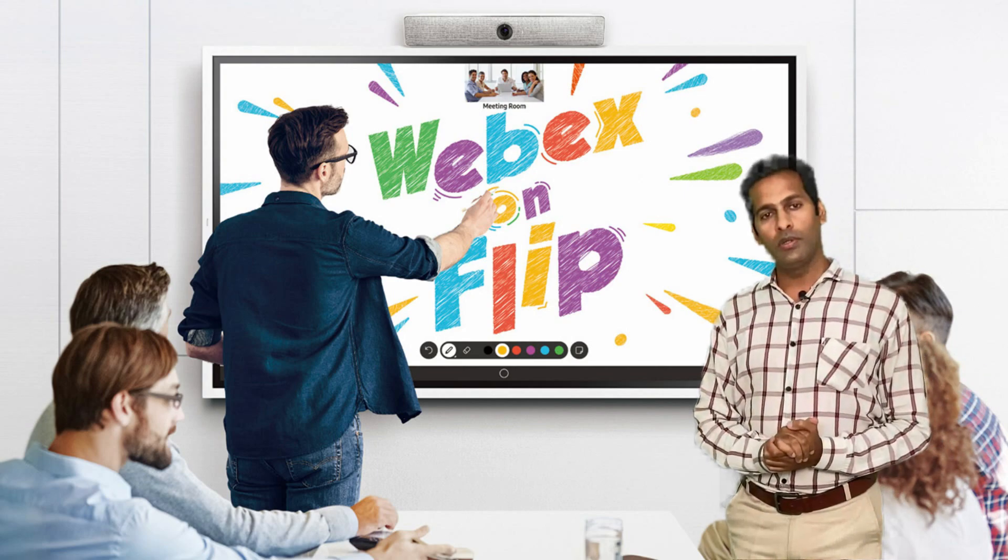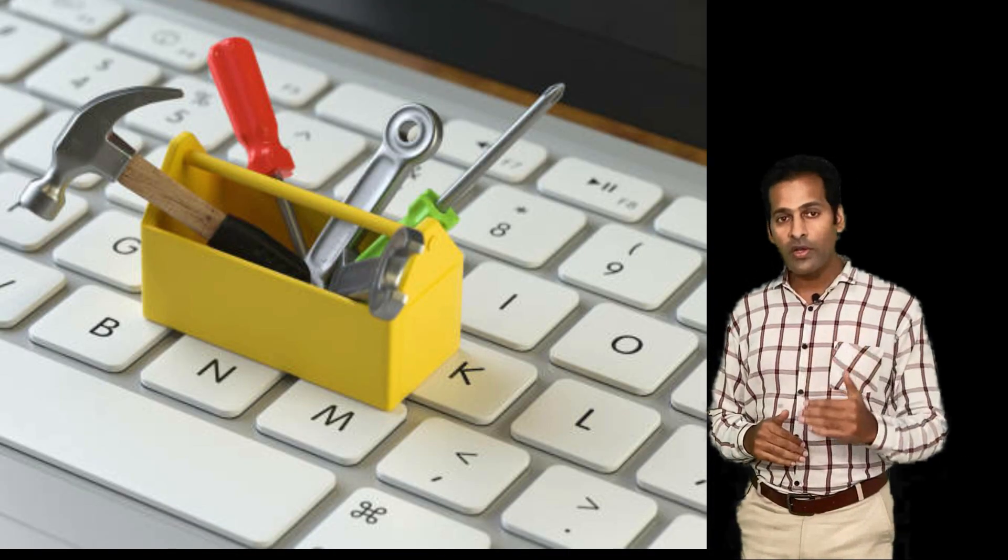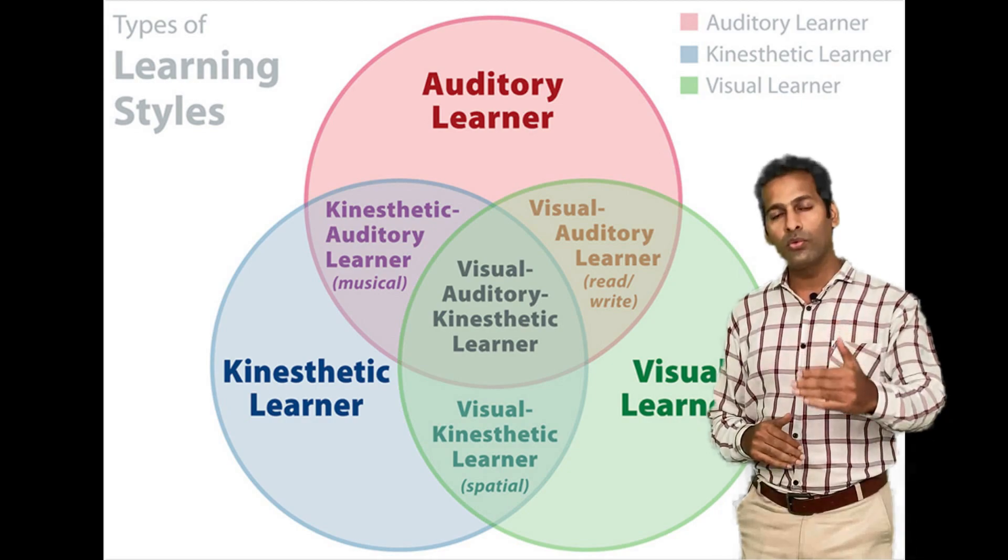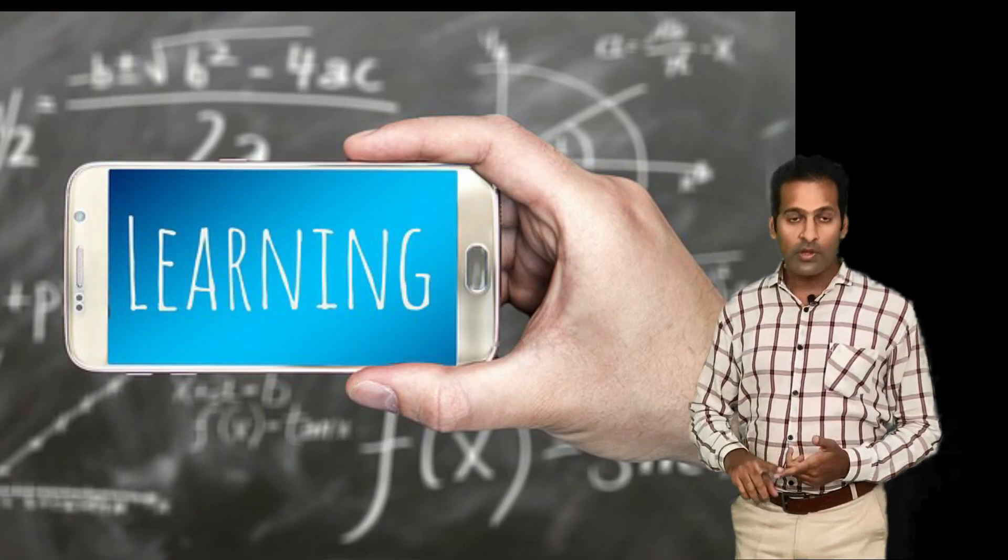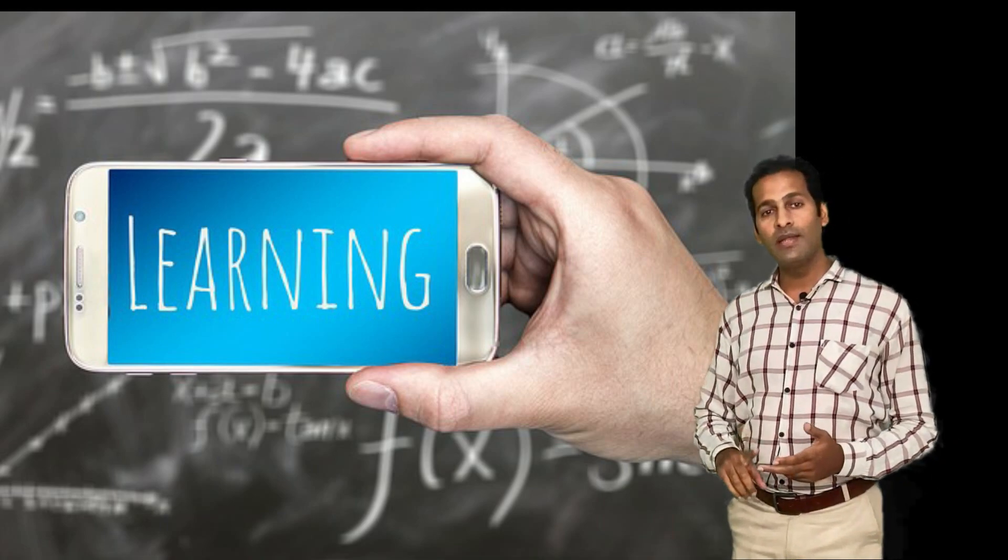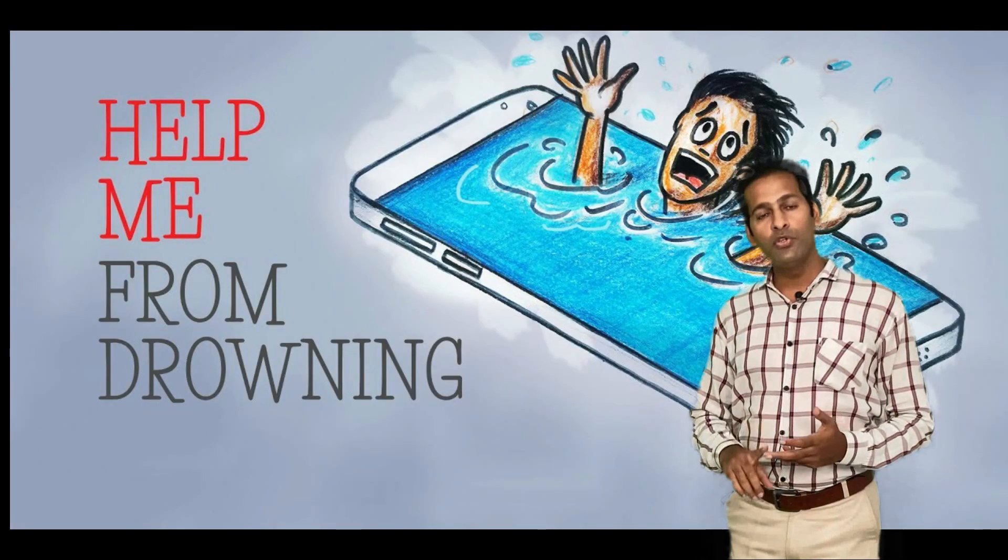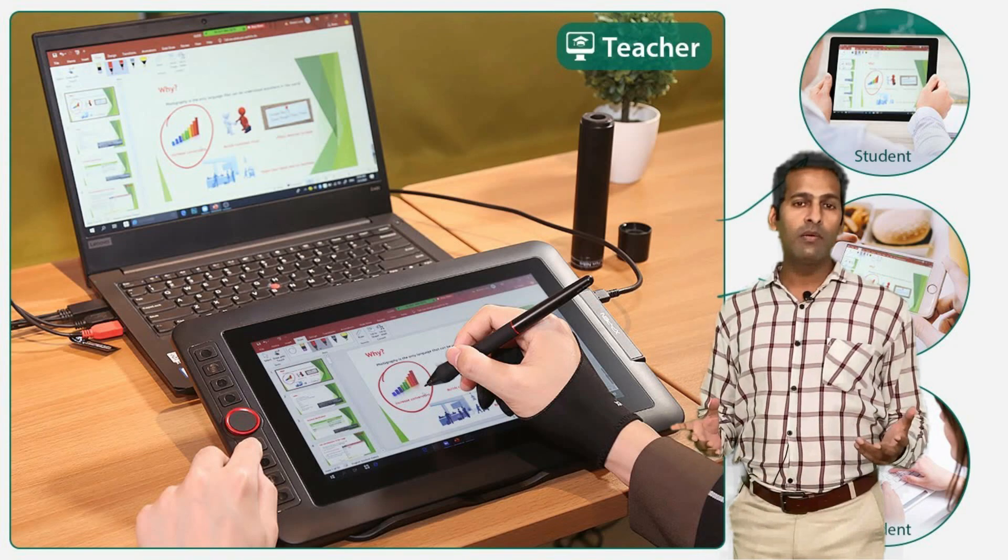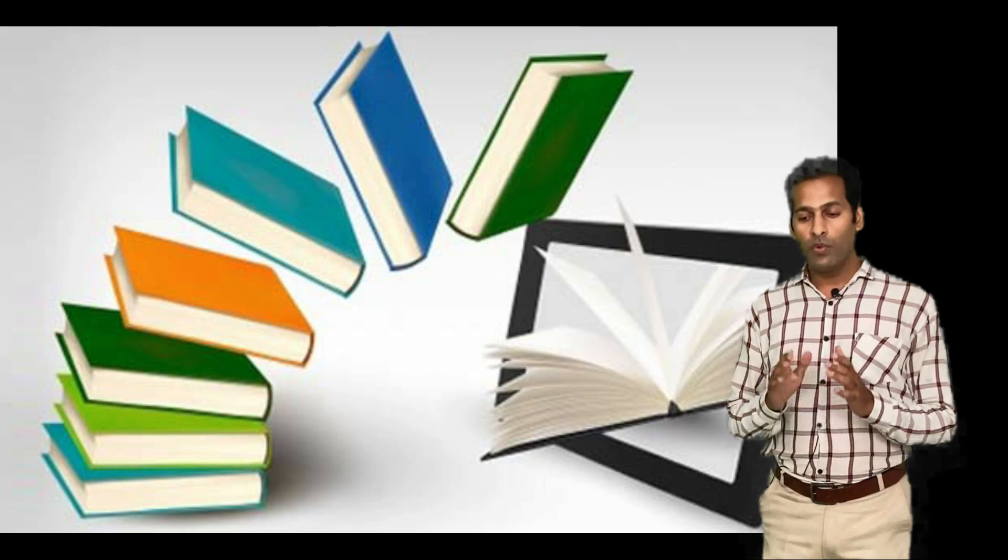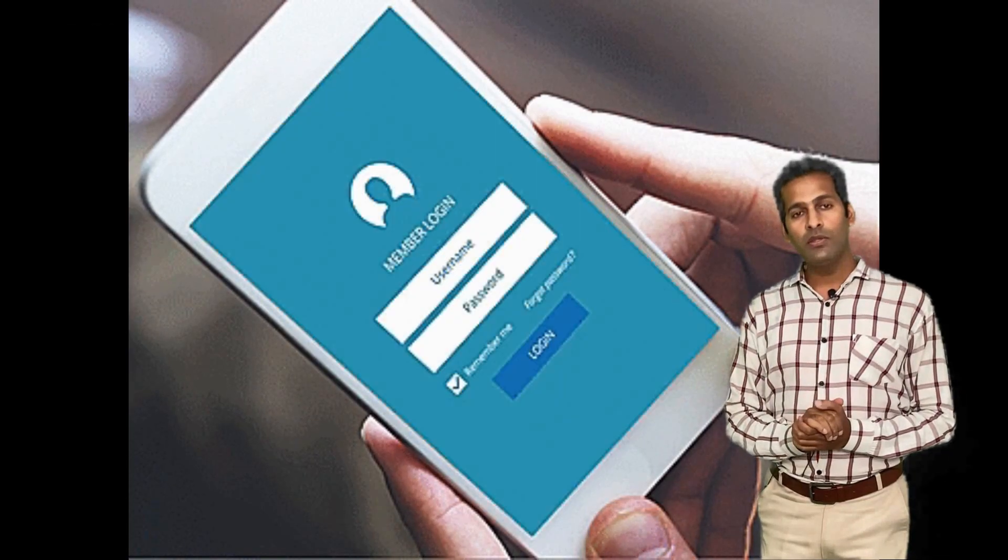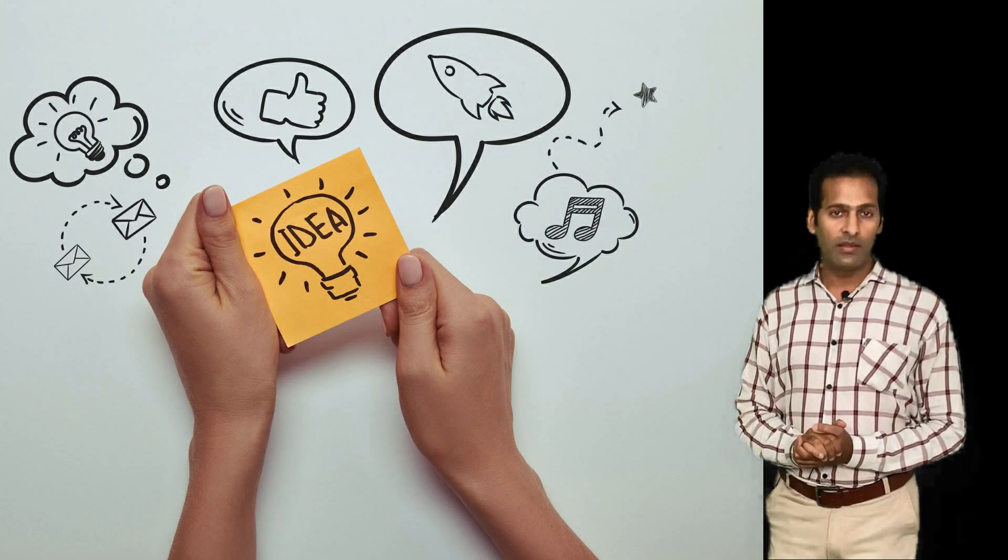There are various categories of the students. We have to teach according to the style the particular student is more comfortable. Student may be surface learner, student may be kinesthetic learner, student may be visual learner, someone may trigger with the music to learn. Someone may act and learn. Of course, we cannot use all the methods for each and every student. But our duty as a teacher is to classify these students into different categories.